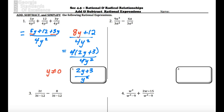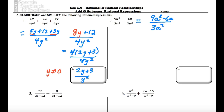Let's look at example number 2. The first thing I want to do is look at the denominators — they are the same: 3a squared. In order to add or subtract two terms, they have to have the same variable to the same power. So we actually can't combine 9a cubed and 6a, because this a does not have a power of 3.